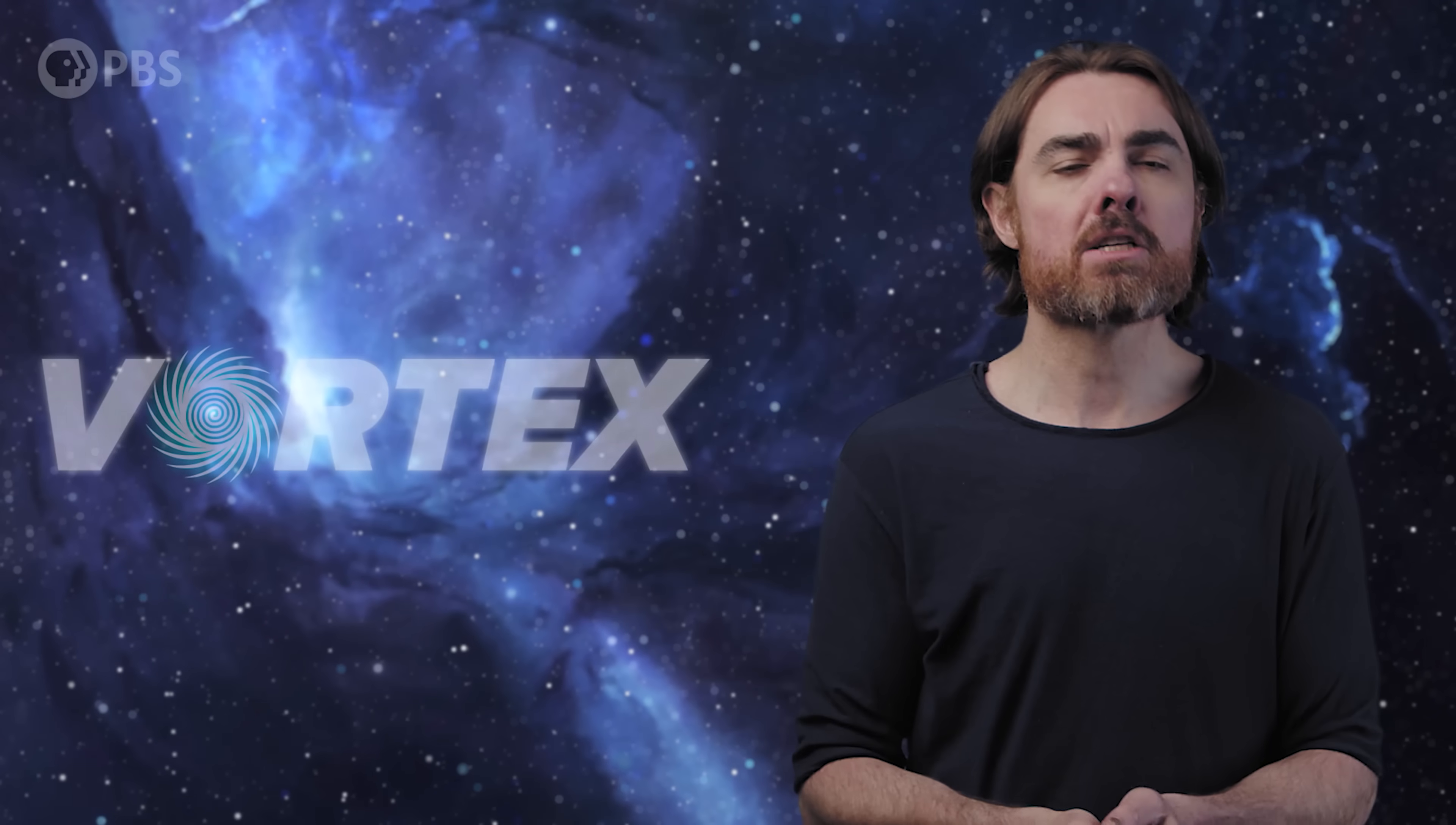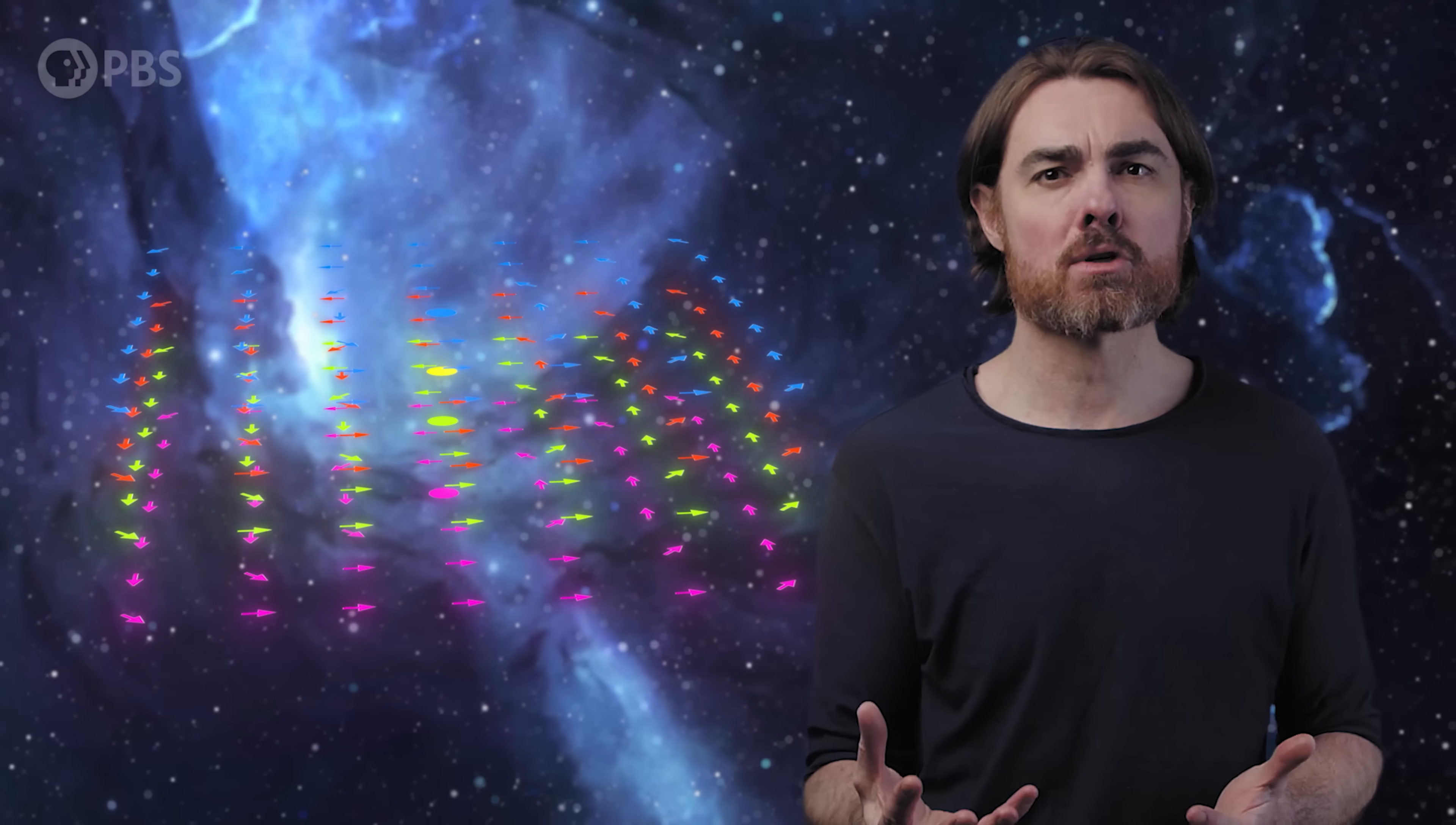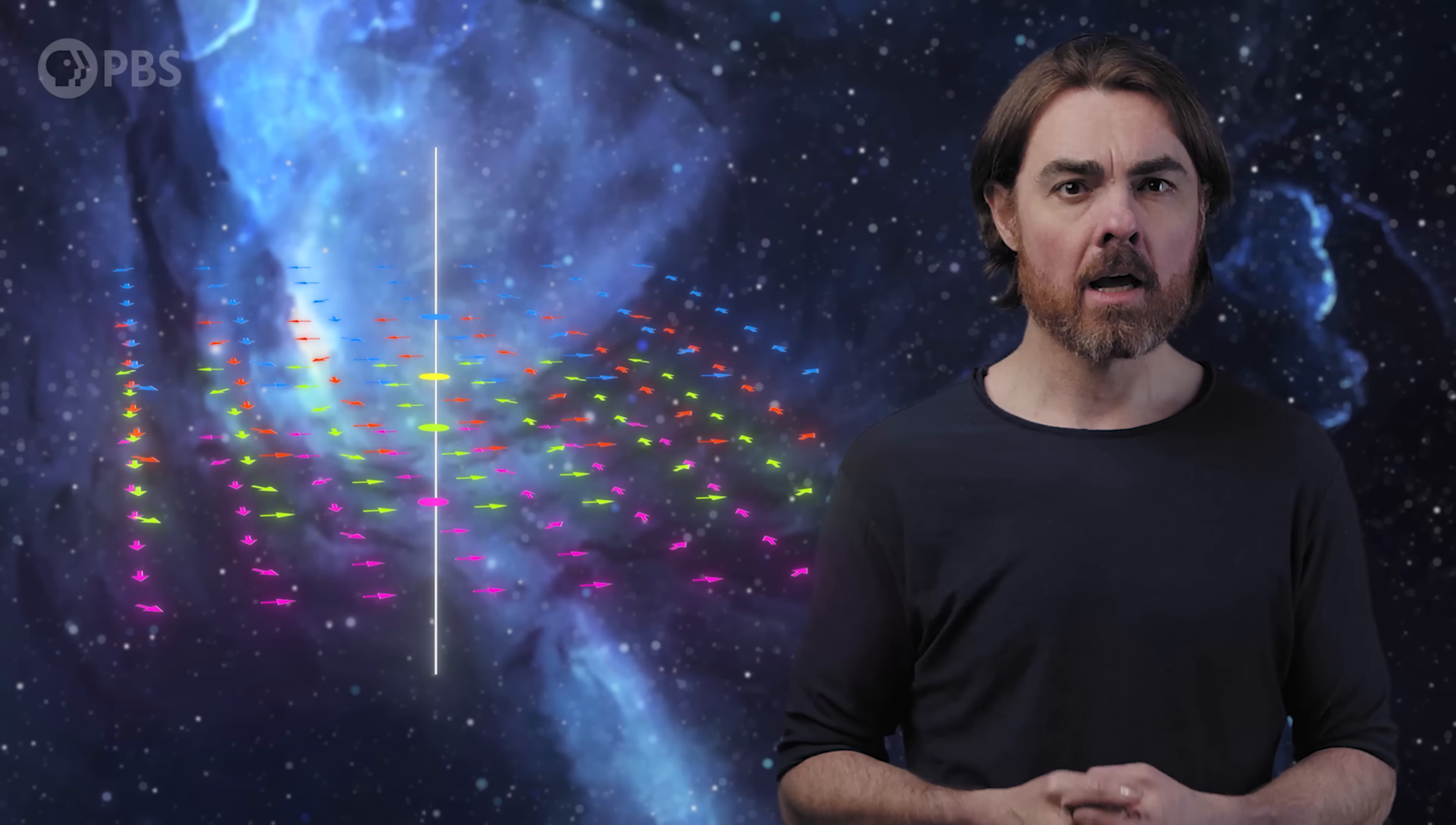This sort of swirly topological defect is called a vortex. And we see 2D versions everywhere, from cyclones to swirls in the hair on your head. But in a 3D space, like actual space, this sort of defect manifests as a cylindrical swirl around the central line. And that central line is our cosmic string.